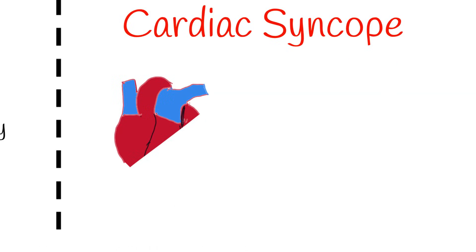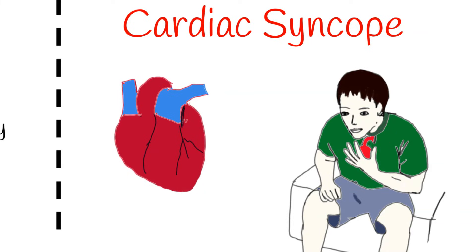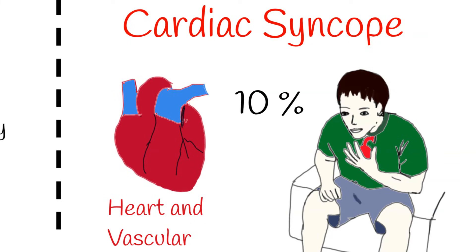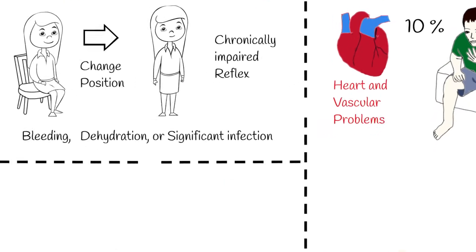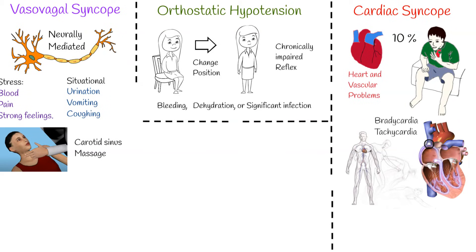Heart-related syncope causes may include an abnormal heart rhythm, problems with the heart valves or heart muscle, pulmonary embolism, or aortic dissection. This is the most serious type of syncope but occurs less often — only 10% of syncopes are caused by cardiac problems. Ventricular tachycardia can cause syncope and also death, so in syncope diagnostics, ECG plays a big role in defining cardiac causes.